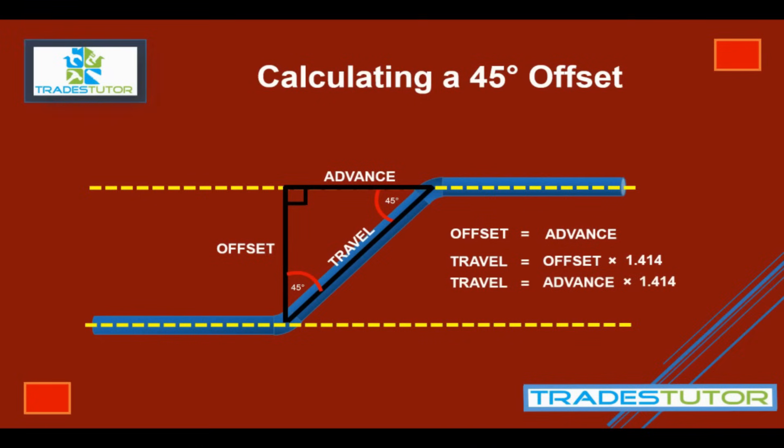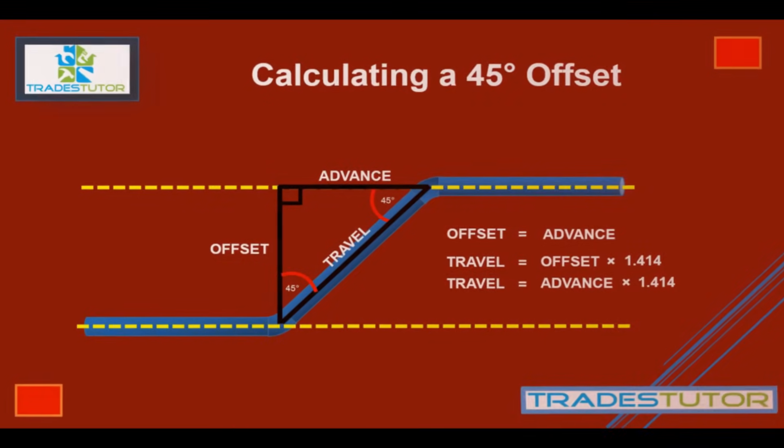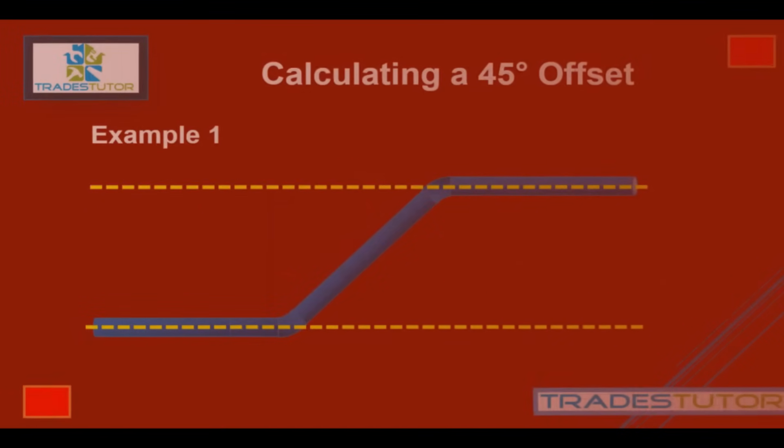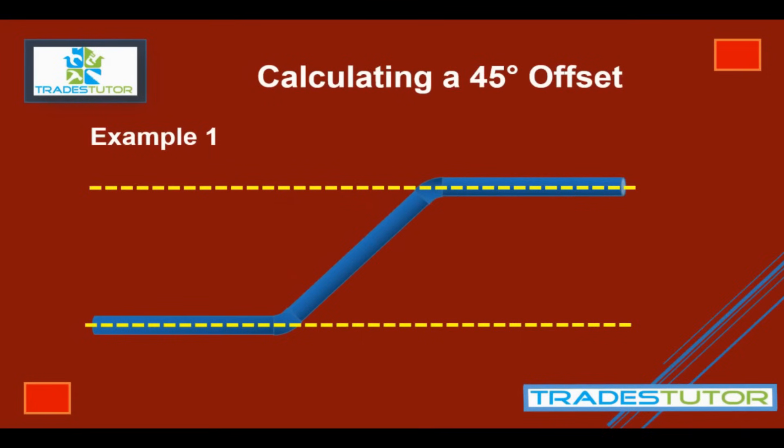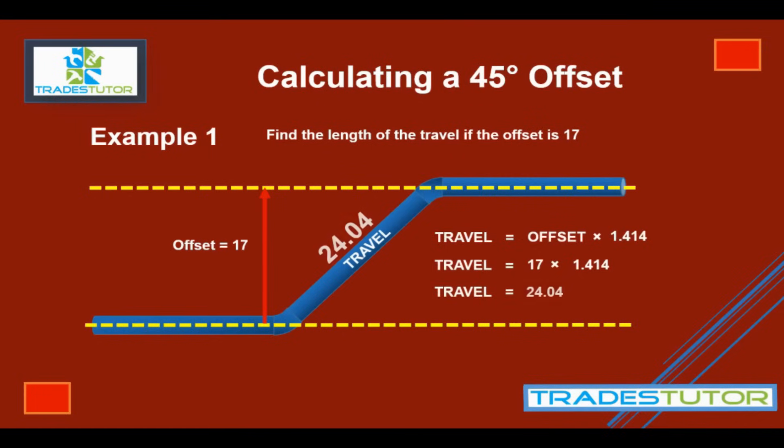Now the best way to do this, or work with this, is just actually to have an example. So, example number one. Here we go. Find the length of the travel if the offset is 17. So, that offset is 17. What's the length of the travel going to be? We go to our formula. Travel is offset times 1.414. 17 times 1.414, the travel is 24.04.